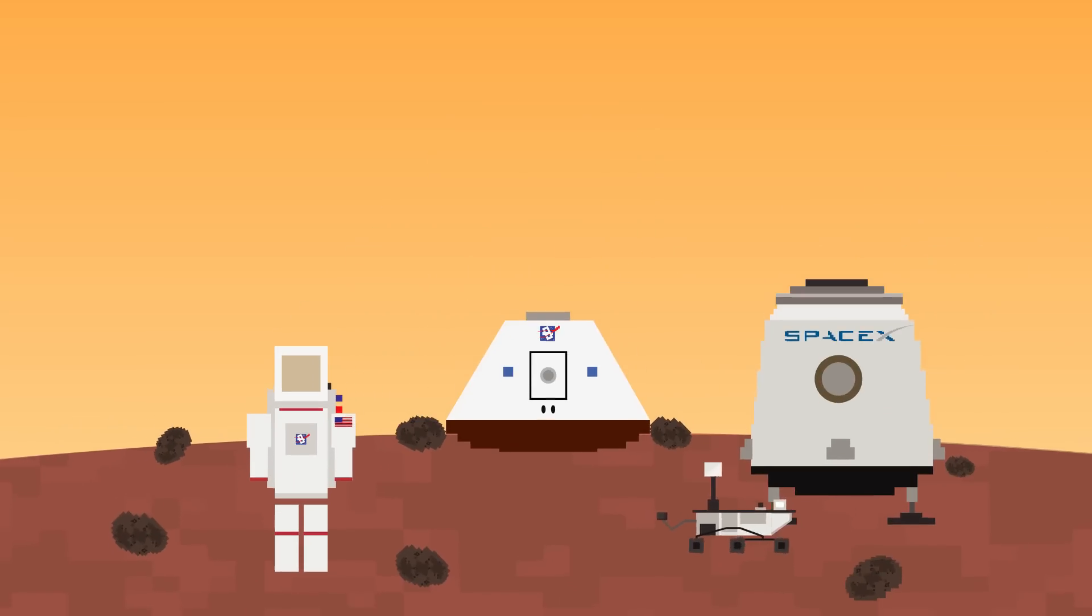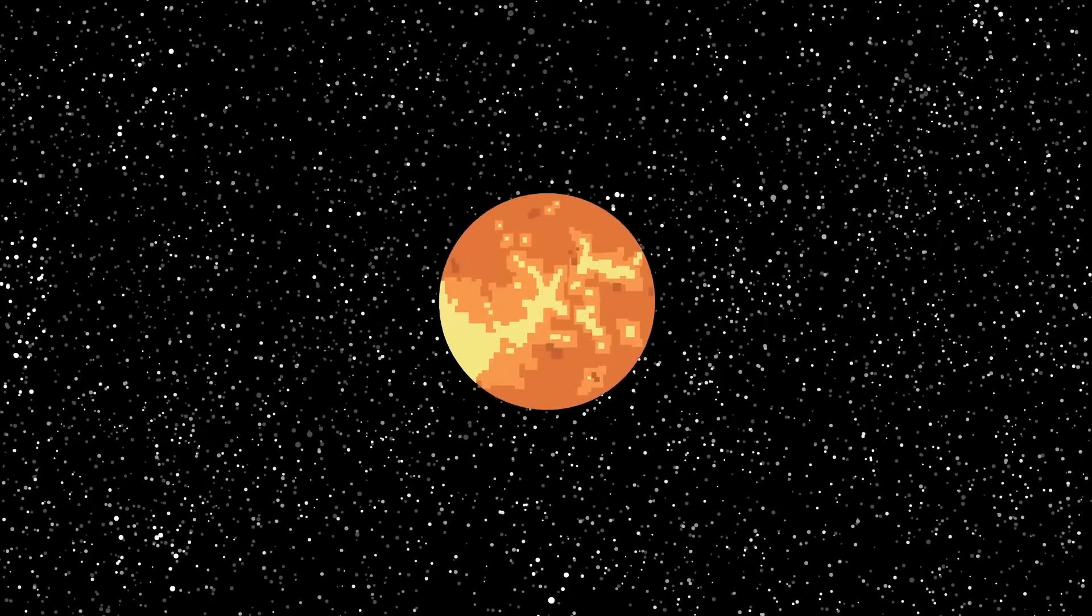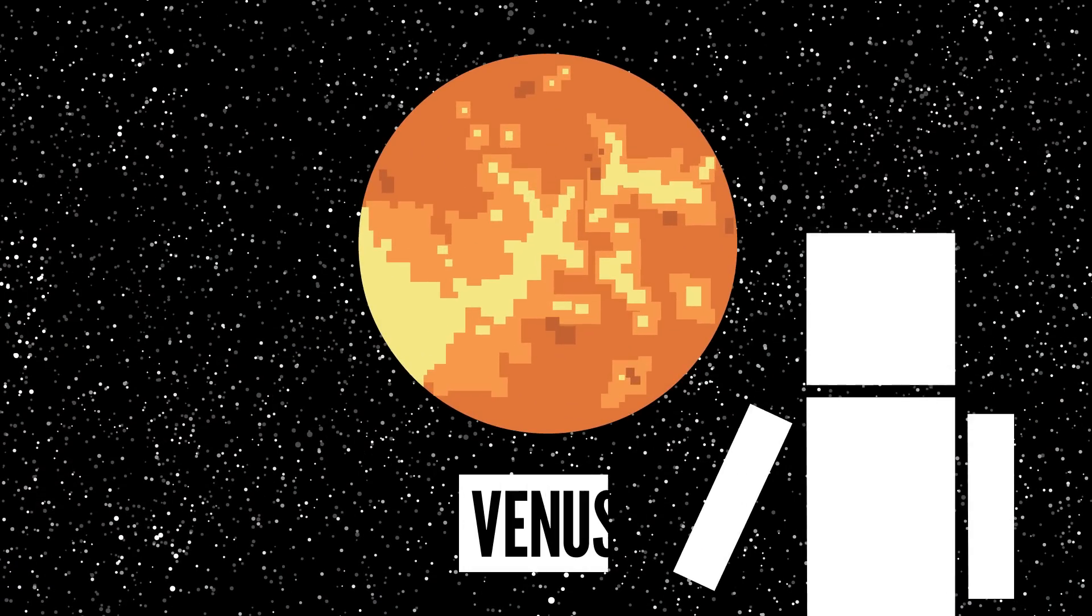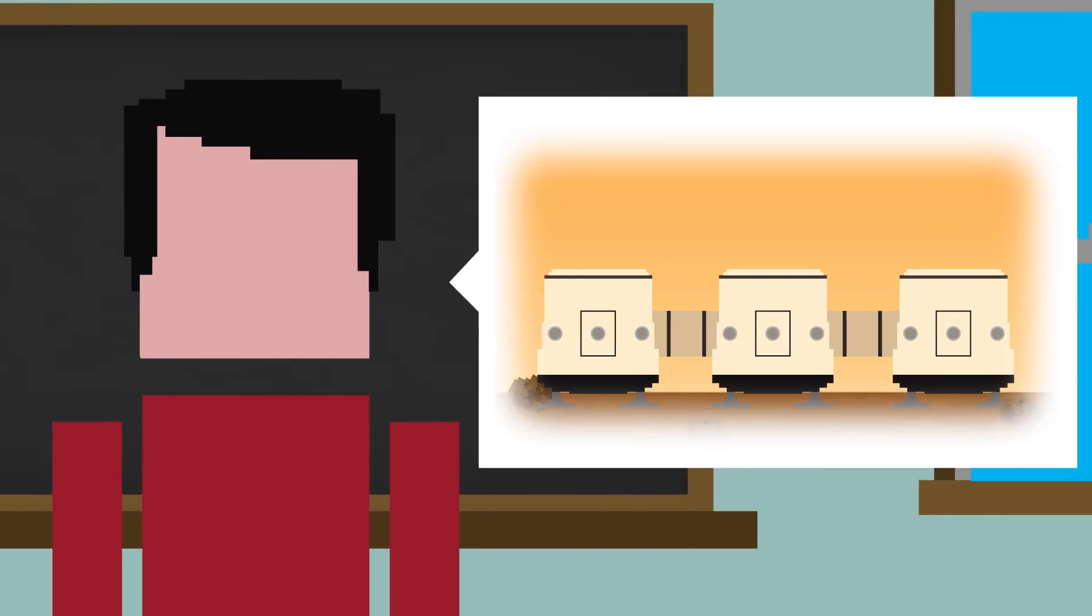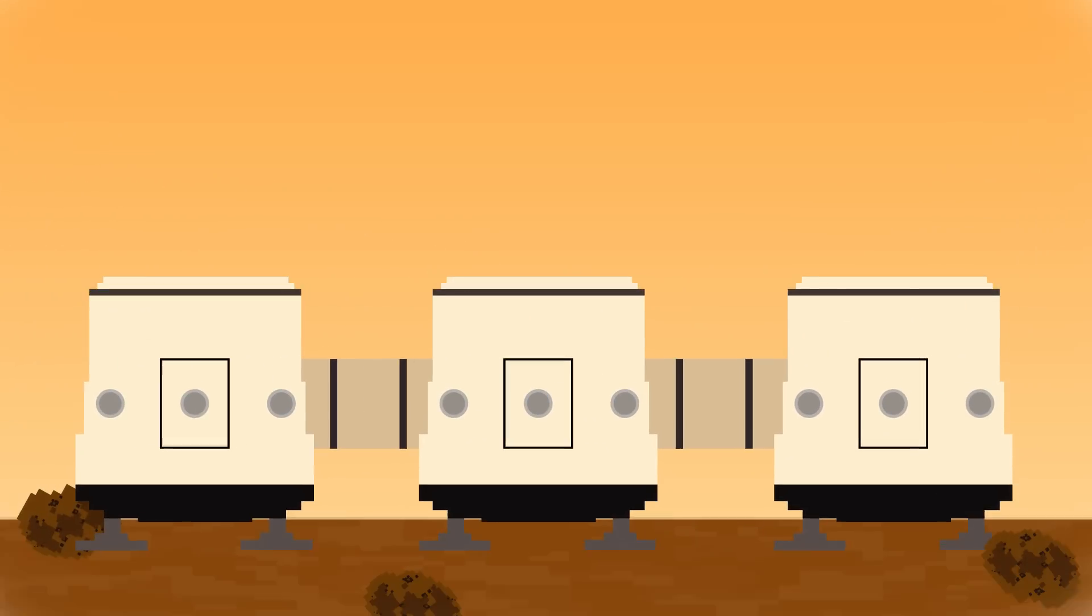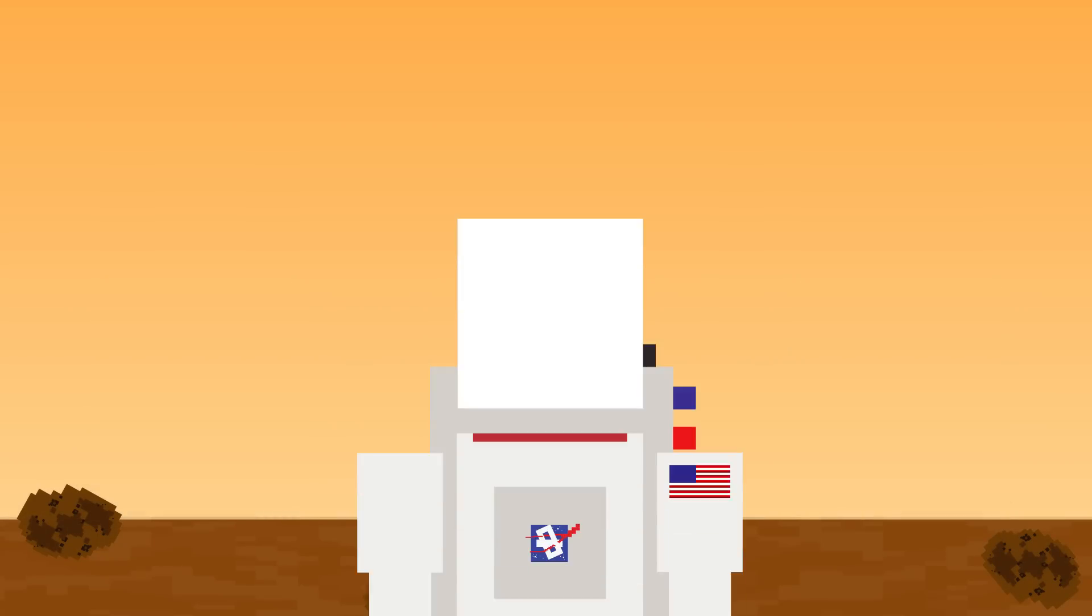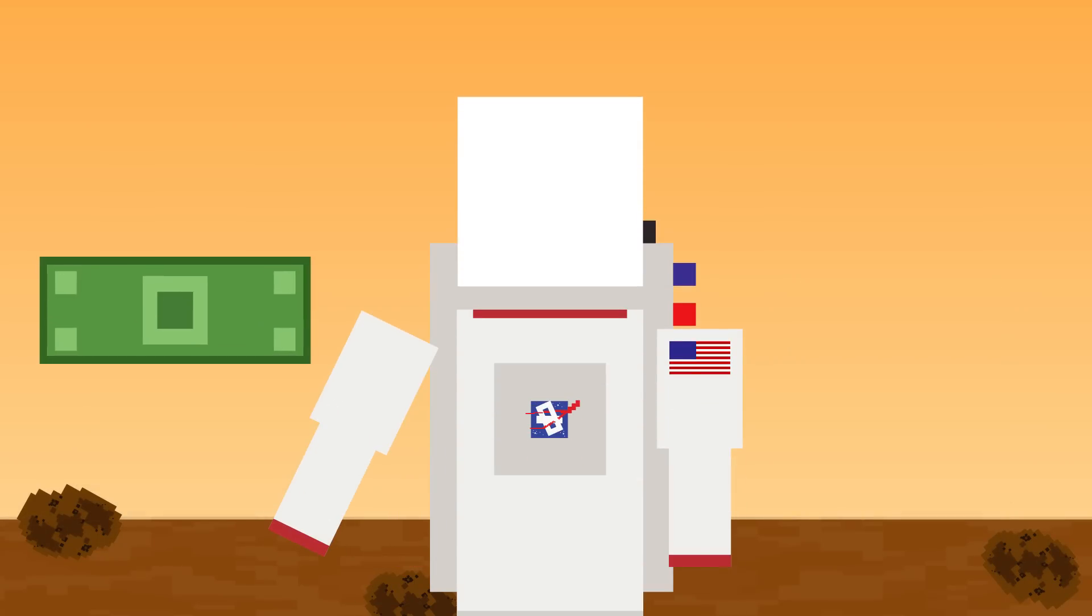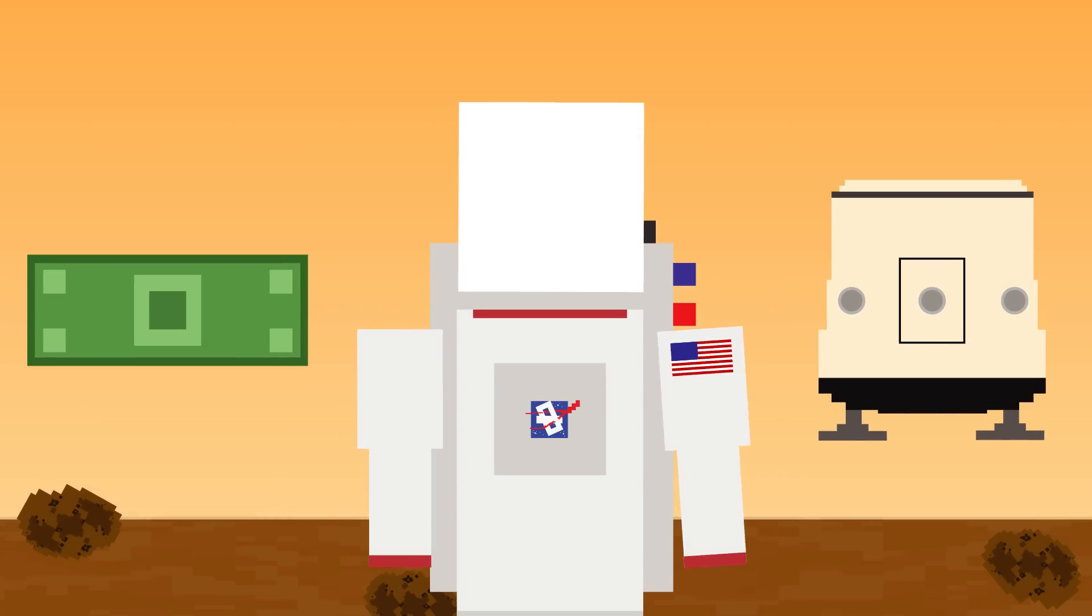Instead, some experts think we'd be better off heading for the scorching, toxic land known as Venus. Yes, really. People have been talking about going to Mars since the 1950s, and we obviously haven't made it yet. Many of the problems with this idea revolve around money and technology. But there's more.